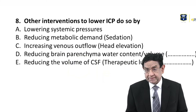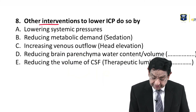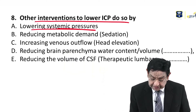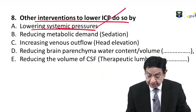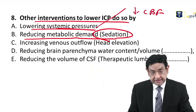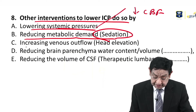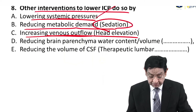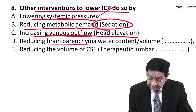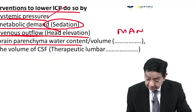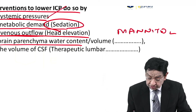We talked about hyperventilation as a mechanism to reduce ICP. Let us learn other interventions that can lower raised ICP. Reducing systemic BP will directly reduce cerebral blood flow. Reducing metabolic demand — that is why we give mild sedation to the patient. Increasing venous outflow — the head end is elevated, which was already done in our patient. Reducing brain parenchyma water content — this can be achieved by giving mannitol, which is an osmotic diuretic.